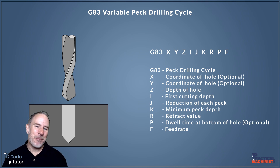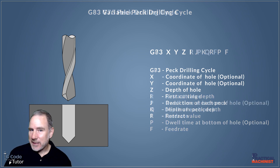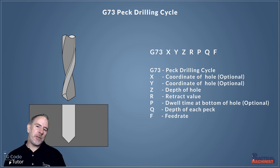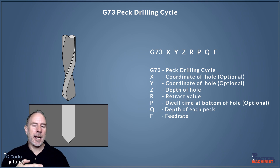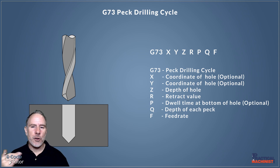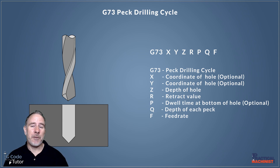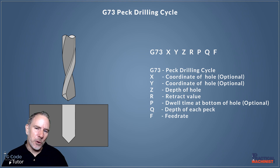We can also use a G73 peck drilling cycle. G73 is used when we don't want the tool to rapid all the way out of the material each time — instead it's a chip-breaking cycle, pulling out just a little before coming back in without fully retracting the drill. If we want partial retracts during our peck drilling cycle, we use a chip-breaking cycle, which is often G73 on your controls. Remember, there are many different versions of FANUC and G-Code, so this may differ on your machine.